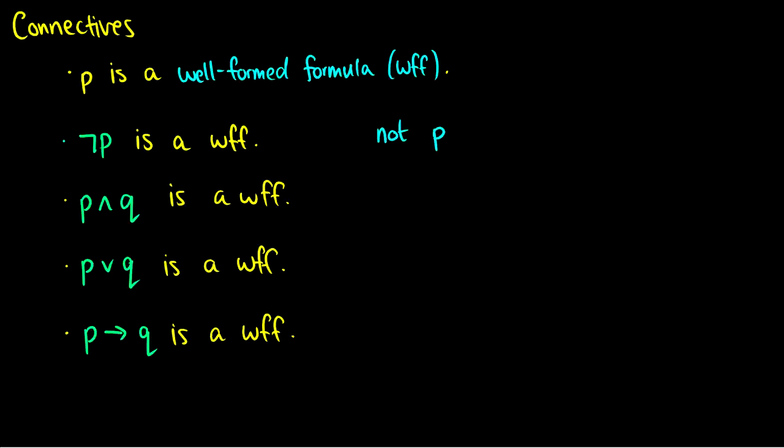The second statement says that not P is a woof. So if P is a woof, then not P is a woof. And this not just means negation. So this little half of a box is just not. The second one says that P and Q is a woof. So if P is a woof and Q is a woof, then we can connect them together for P and Q as a woof. And this is also known as a caret. That is the and symbol, that is a caret.